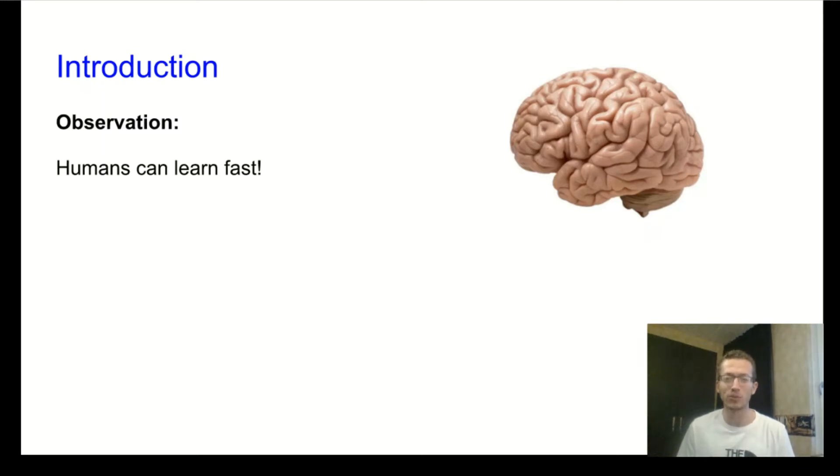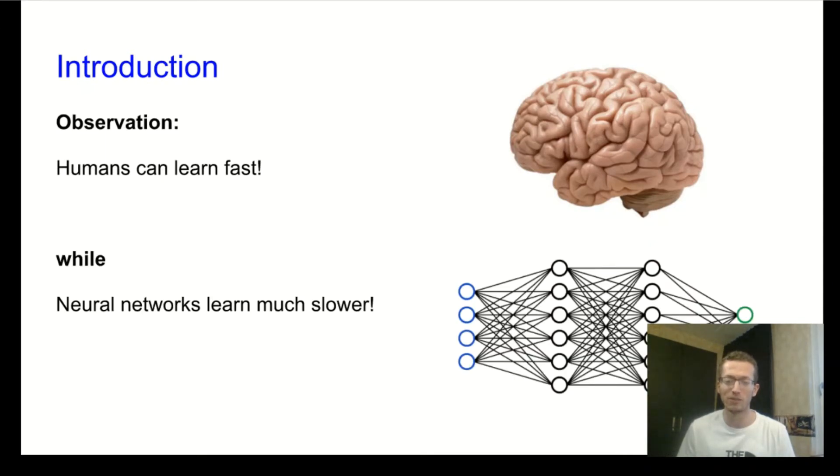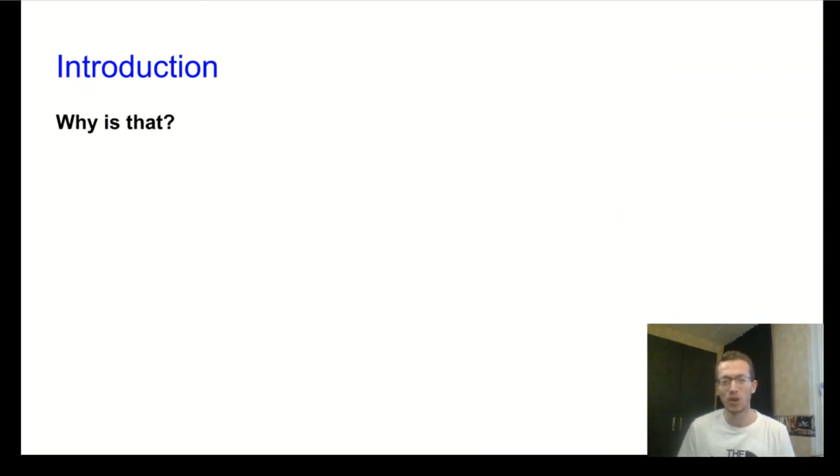On the other hand, we have neural networks that also try to learn some of the things that we humans do. And yes, they can achieve human level or even superhuman level performance on some tasks, but they learn in a very slow manner. So you can ask yourself, why is that?